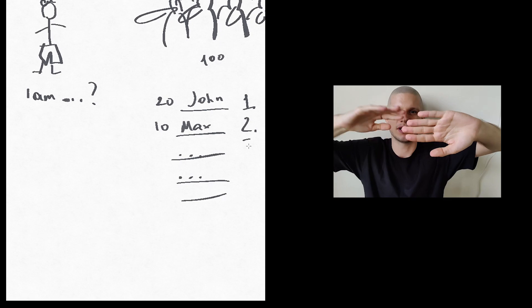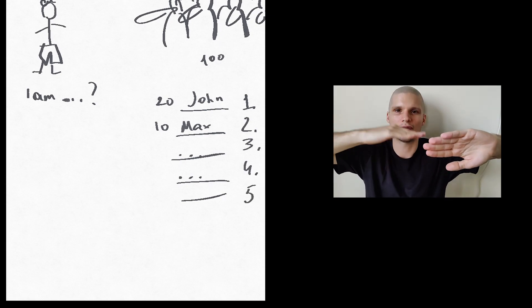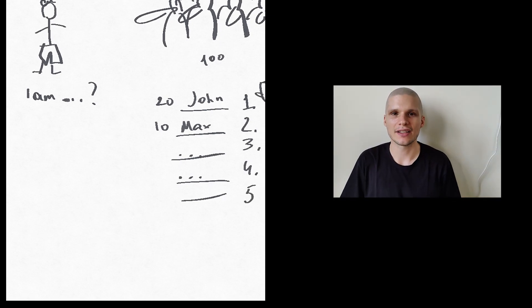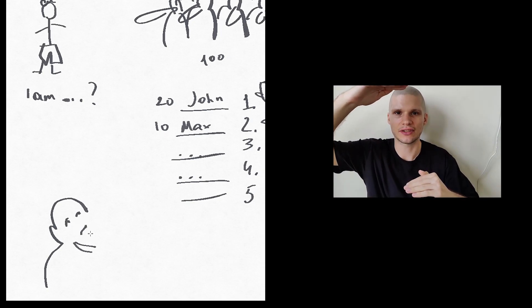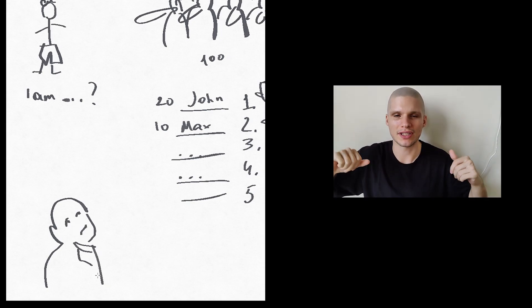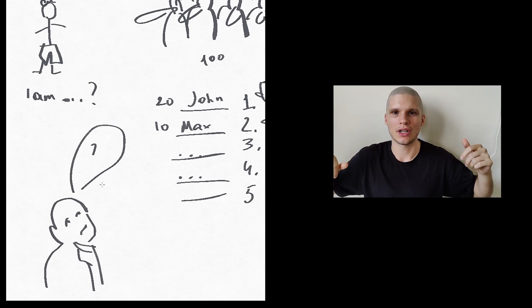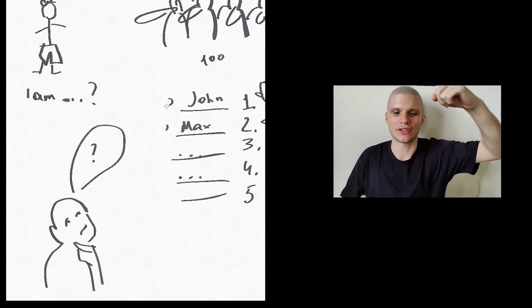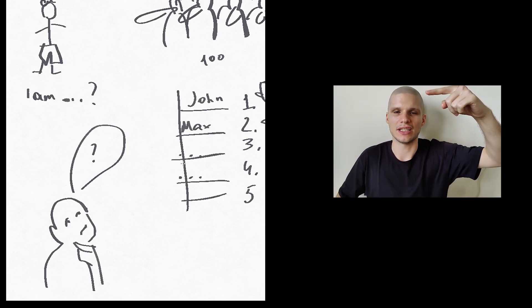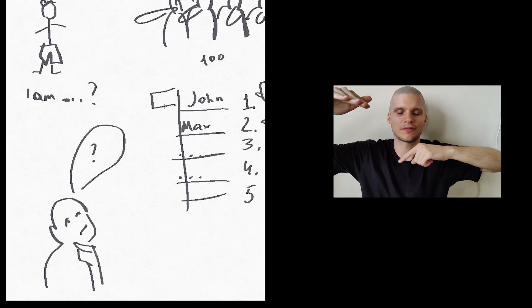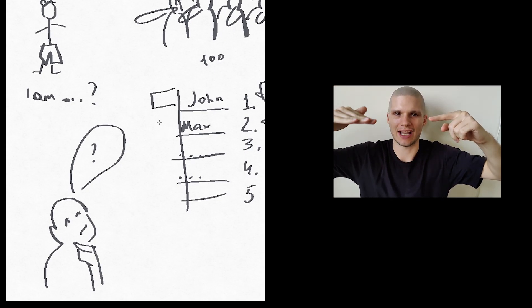And they list them and they take the top five, John, Max, George, the top five, one, two, three, four, five answers. And people try to guess the top five answers. The higher the answer, the more points you get. So the number one answer, the top answer is the most points. Number two is the next most.